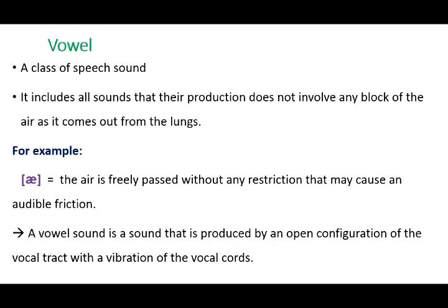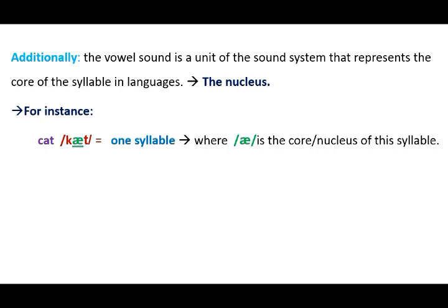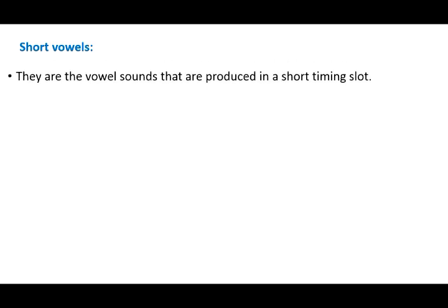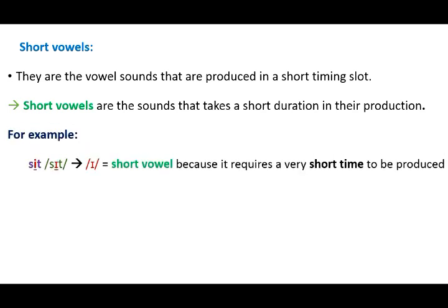Additionally, the vowel sound is a unit of the sound system that represents the core or nucleus of the syllable in languages. For example, the word 'cut' is composed of one syllable, and the vowel 'a' is the core or nucleus of that syllable. There are three main types of vowels: short vowels, long vowels, and diphthongs. Short vowels are the vowel sounds that require a short duration of time in their production — for example, in the word 'set,' 'e' is a short vowel.